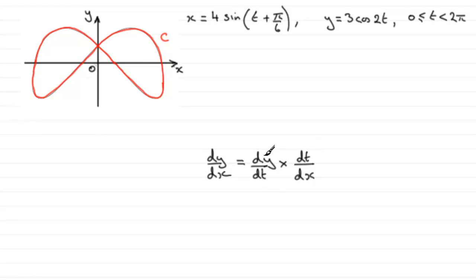So we need to find out what dy by dt is. And although this is dt by dx, we need to get dx by dt from here and then do the reciprocal. So let's start with dx by dt.